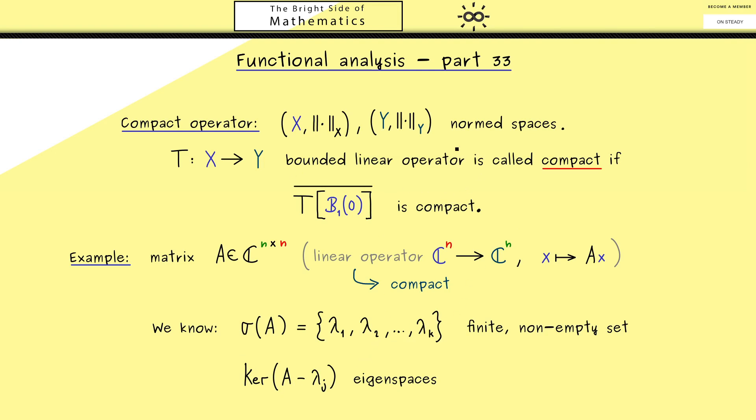Of course here all the eigenspaces are finite dimensional spaces by definition. But in general for bounded linear operators in an infinite dimensional space they could be infinite dimensional as well. However maybe it still holds that the eigenspaces are finite dimensional for compact operators because they are very close to matrices.